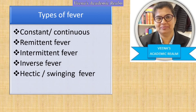Intermittent fever is characterized by variation of body temperature where the temperature rises from normal to subnormal and then to high — for example, normal body temperature in the morning, subnormal (less than 95°F) in the afternoon, and high (101°F) in the evening. Inverse fever shows a fluctuation where there is normal body temperature in the morning, an increase in the afternoon, and normal again in the evening.